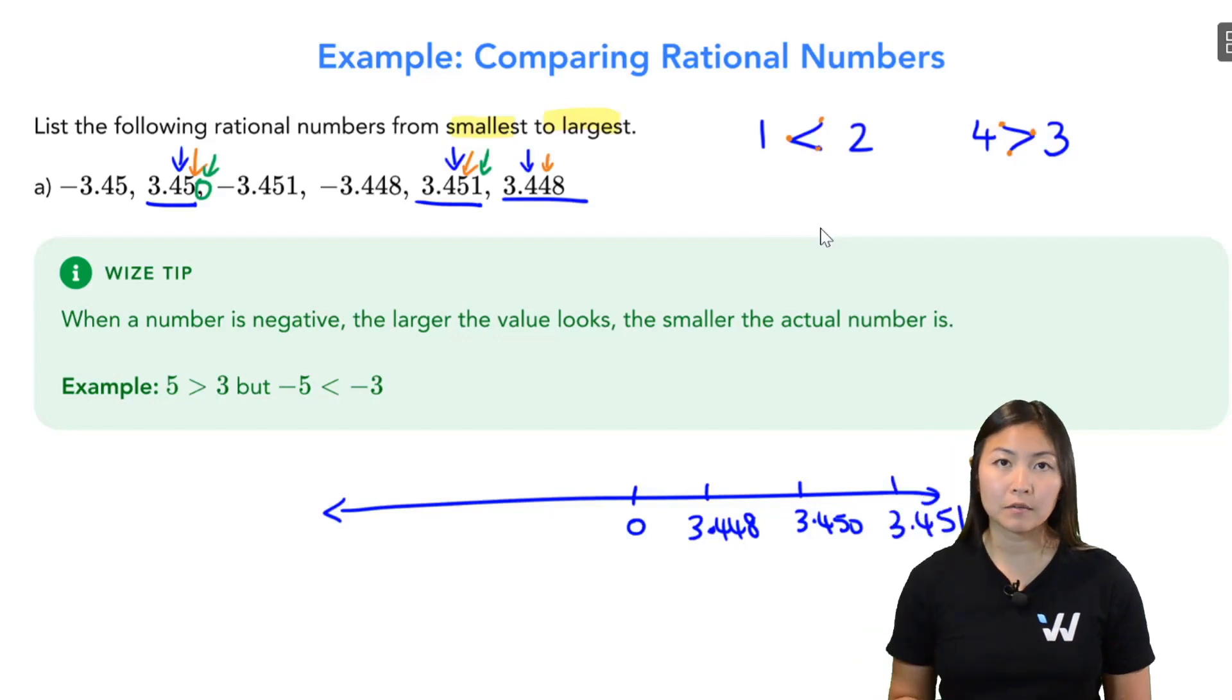How about my negatives? Negatives is just the opposite. So if I look at my numbers here, they're the same values, but they're just negatives. So the largest looking one is 3.451. So that means that negative 3.451 is going to be the smallest number in this list.